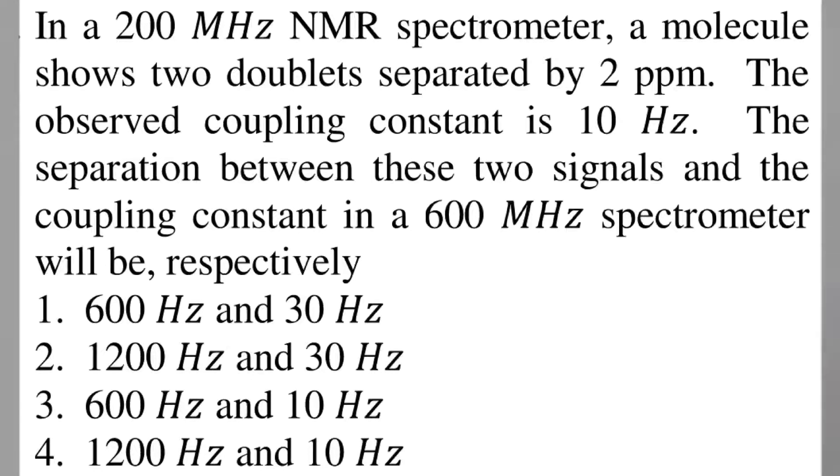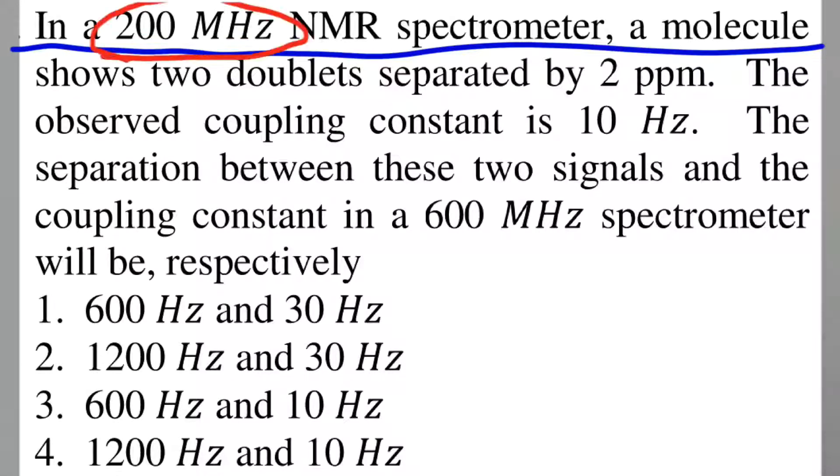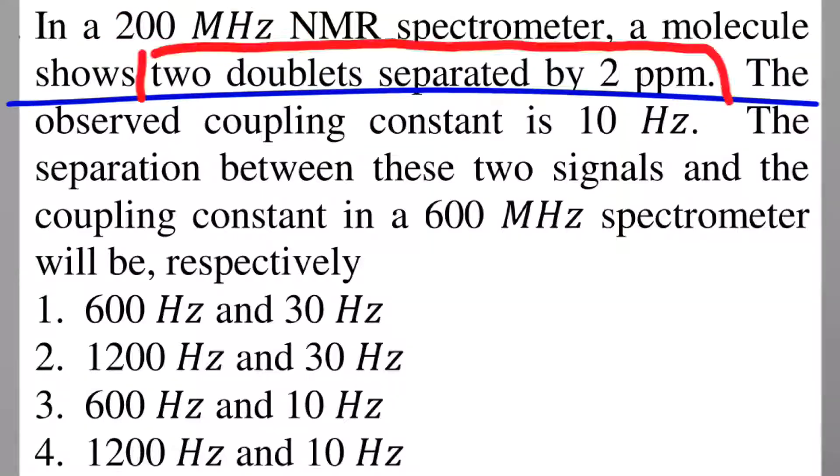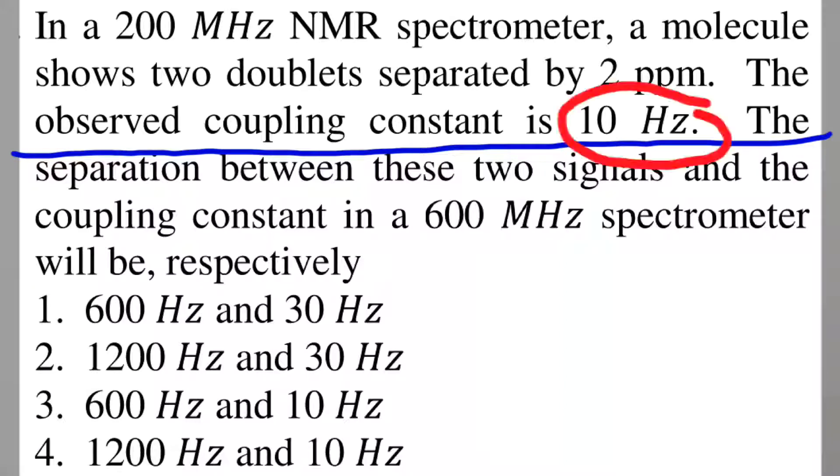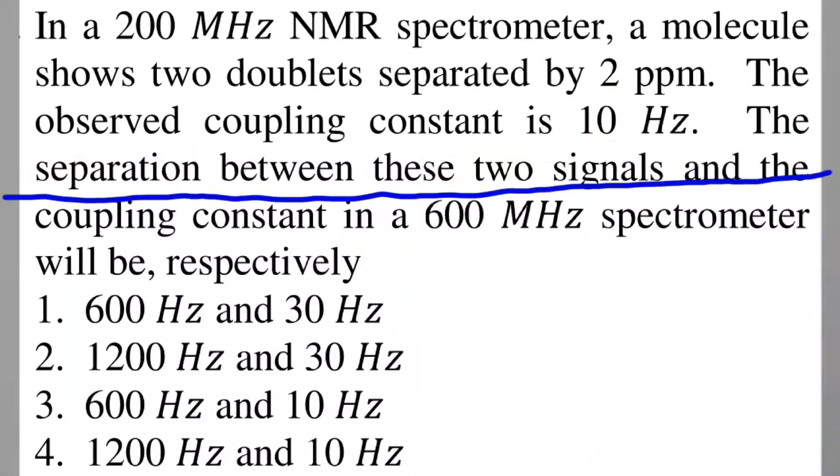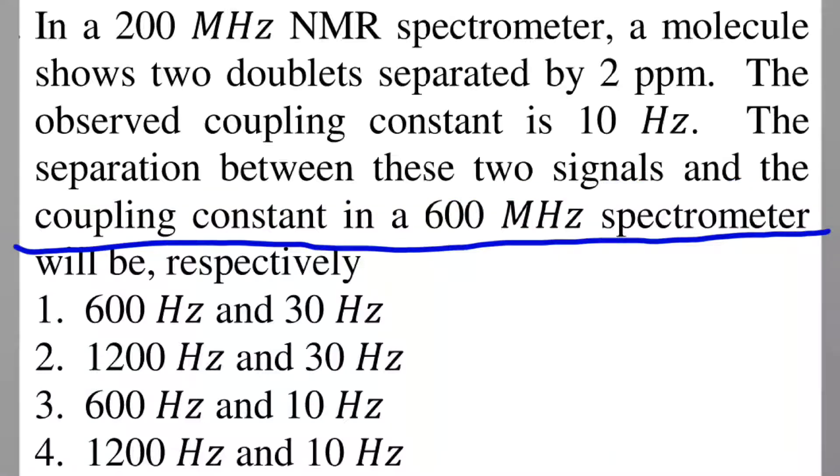In a 200 megahertz NMR spectrometer, a molecule shows two doublets separated by 2 ppm. The observed coupling constant is 10 Hz. The separation between these two signals and the coupling constant in a 600 megahertz spectrometer will be...